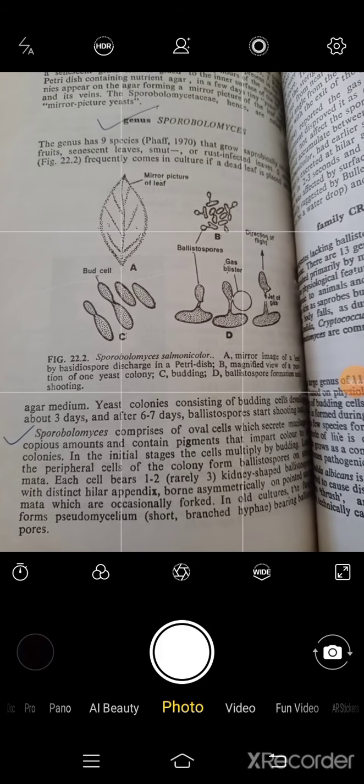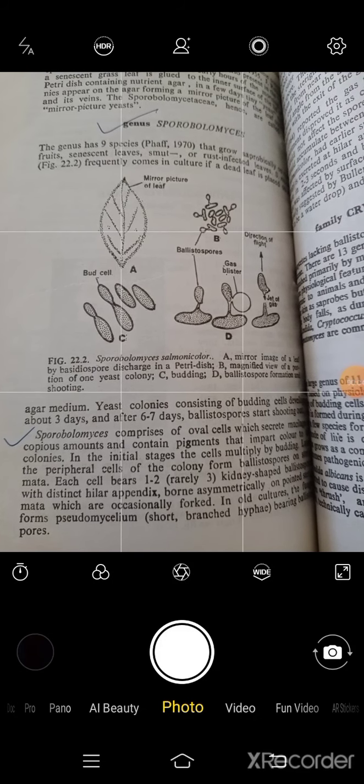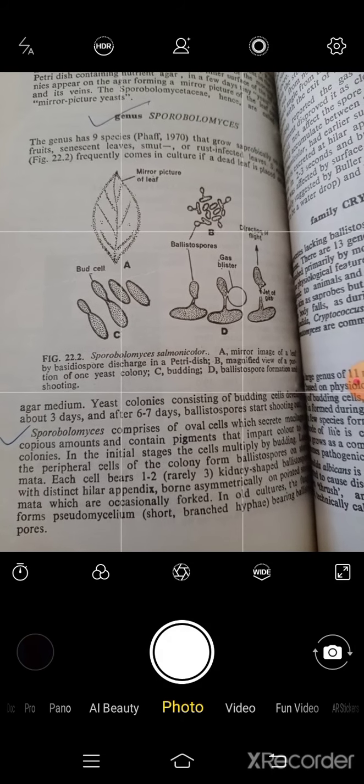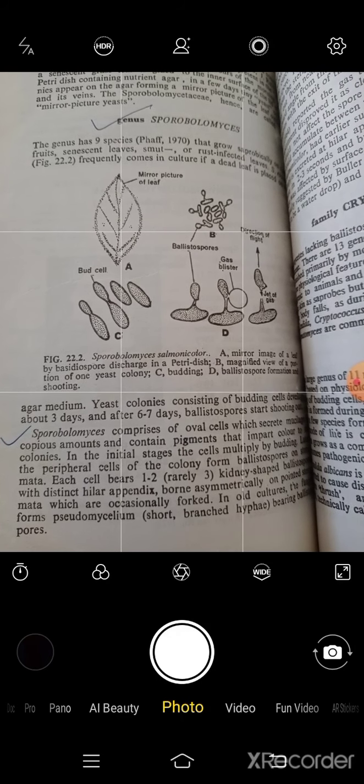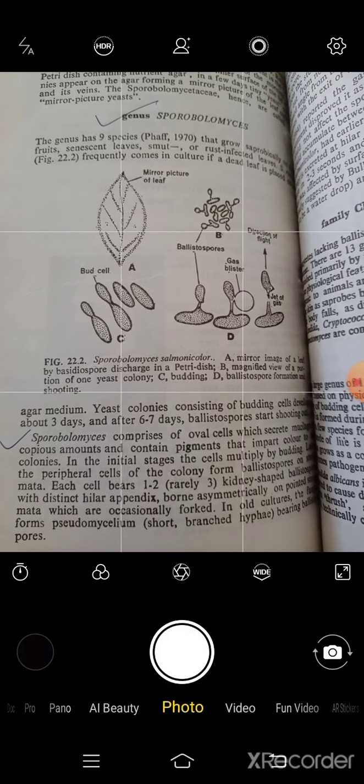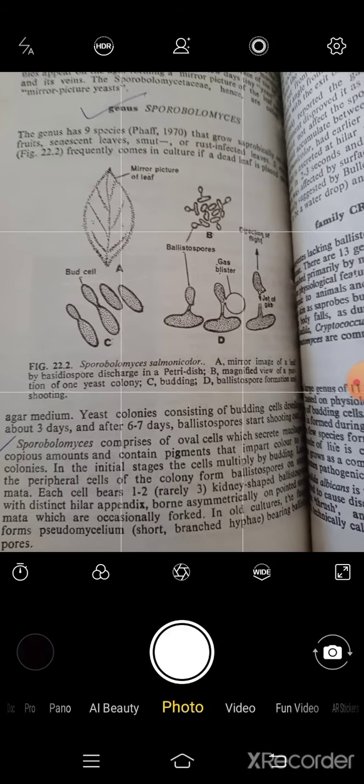Yes, good morning students. In deuteromycetes, which is imperfect class in fungi, we have two members to study. One is sporobolomyces, another is cryptococcus.